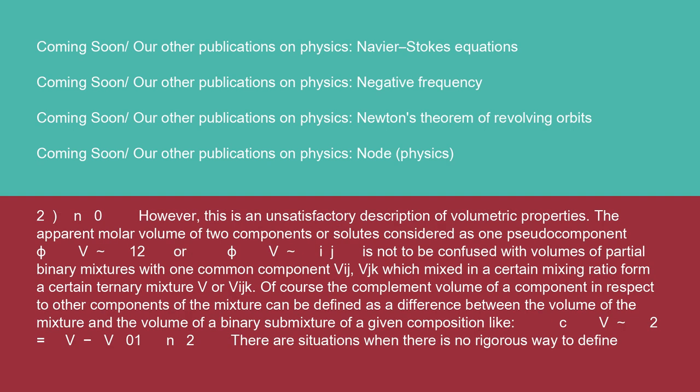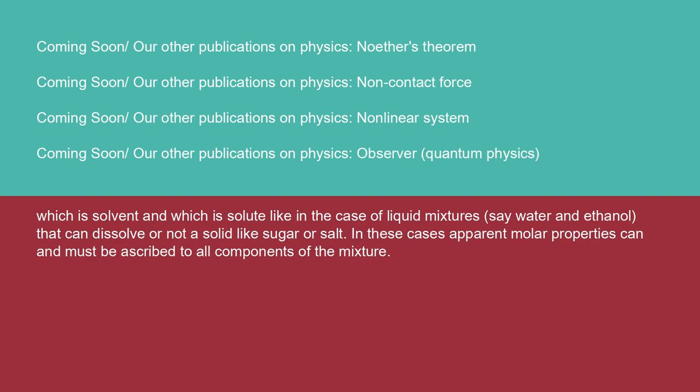However, this is an unsatisfactory description of volumetric properties. The apparent molar volume of two components or solutes considered as one pseudocomponent φV₁₂ or φVᵢⱼ is not to be confused with volumes of partial binary mixtures with one common component. There are situations when there is no rigorous way to define which is solvent and which is solute, like in the case of liquid mixtures — say water and ethanol — that can dissolve or not a solid like sugar or salt. In these cases, apparent molar properties can and must be ascribed to all components of the mixture.